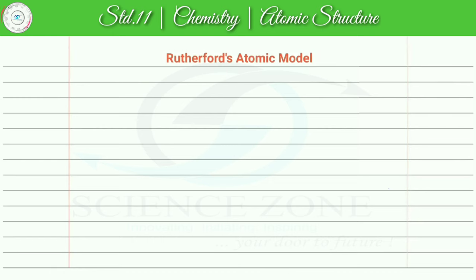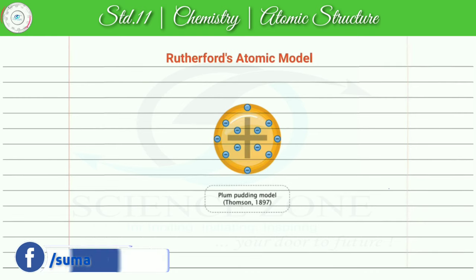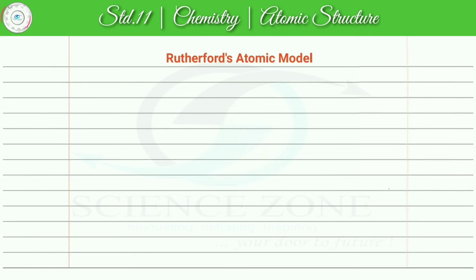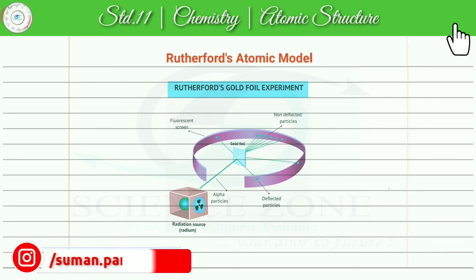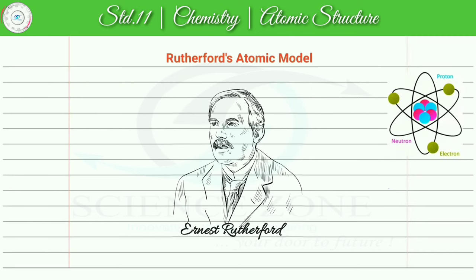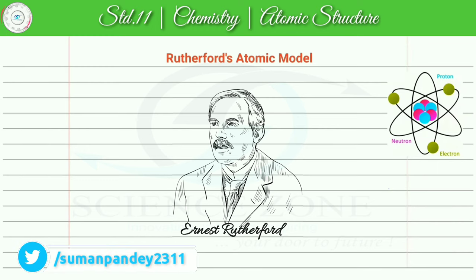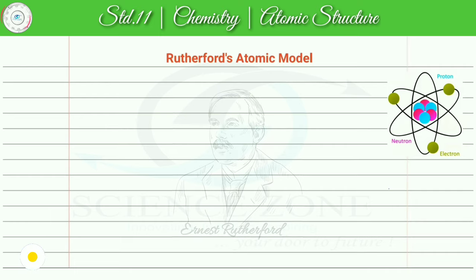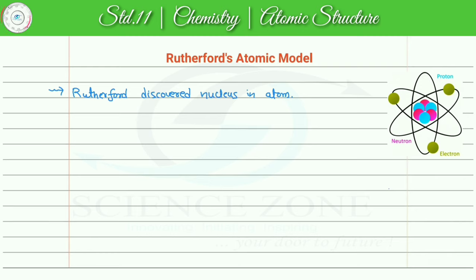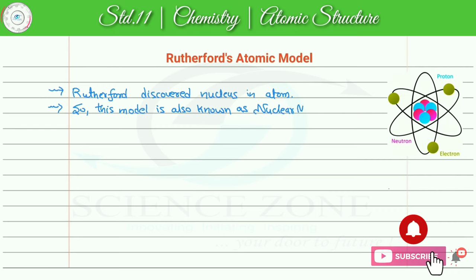The next topic is Rutherford's Atomic Model. From Thomson's Atomic Model's limitations, Rutherford proposed a new model. Rutherford performed a scattering experiment on which his atomic model is based. Rutherford discovered the nucleus in the atom, which is why this model is also known as the nuclear model.